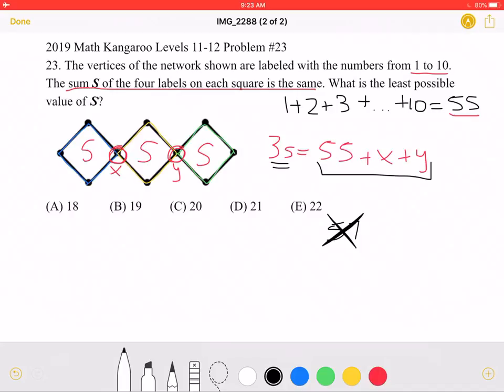So then we need to move on to the next smallest multiple of 3, which would be 60. And again, we want the least possible multiple of 3, because we're looking for the least possible value of s. So if it was 60, then we would have 60 is equal to 55 plus x plus y, making x plus y equal to 5. And that works, because we could have x and y being 2 and 3, or 1 and 4, both of which are different numbers from 1 to 10. So that works.